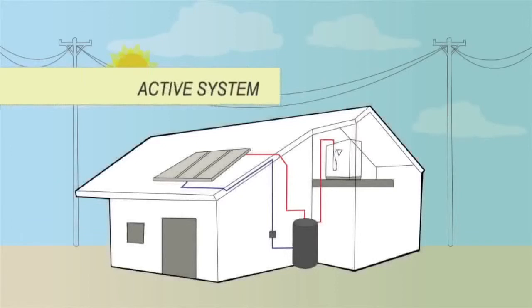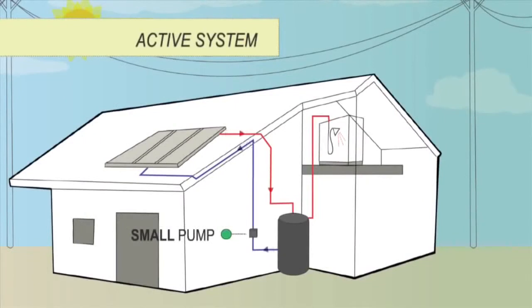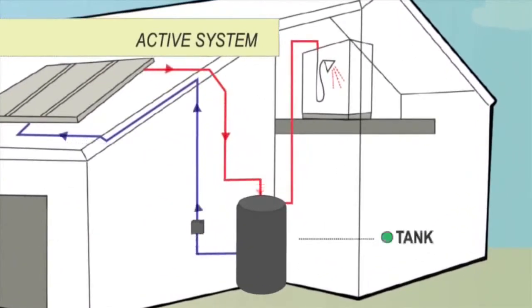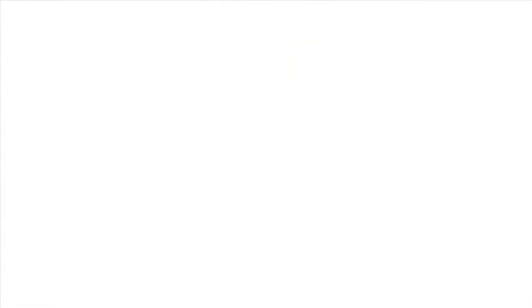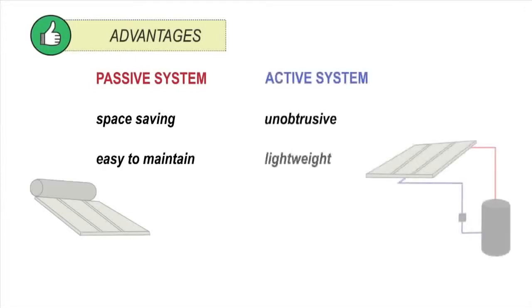Active systems use a small pump to move water between the collectors and the tank. The location of the tank can be within the roof or on the ground. Each type of system has advantages. A passive system is space saving and easy to maintain with no moving parts. An active system is unobtrusive, lightweight, can use an existing tank, and the tank can be located closer to where hot water is used, reducing heating loss in pipes. But the pump uses some energy.